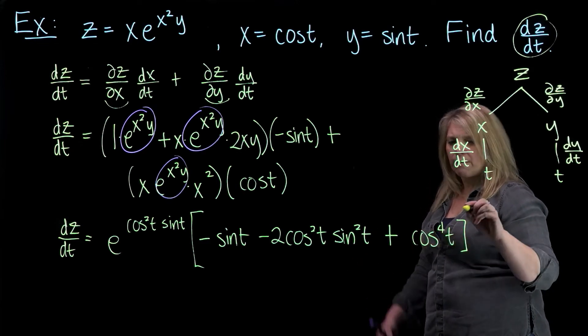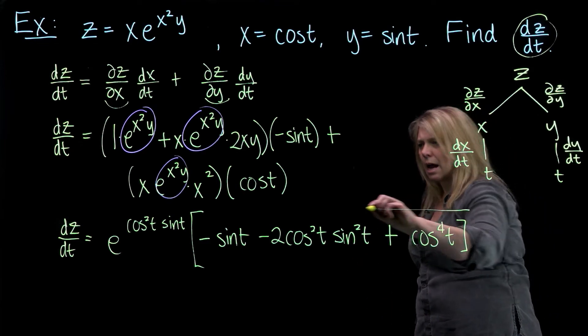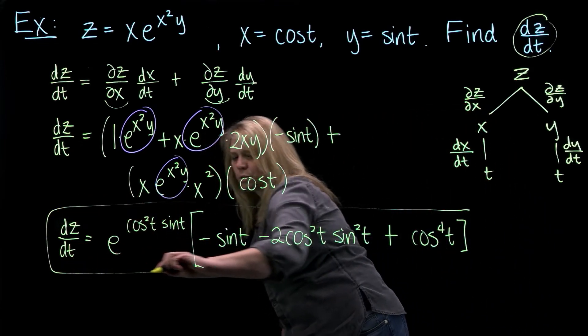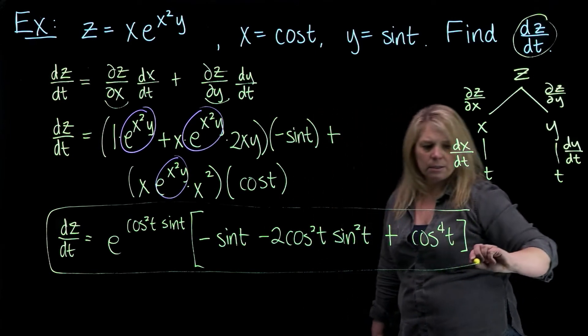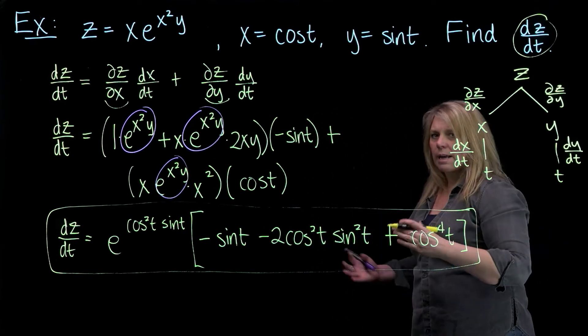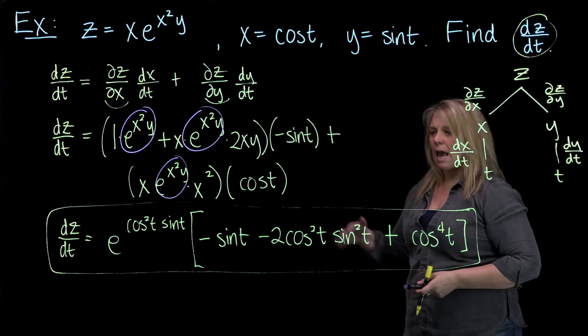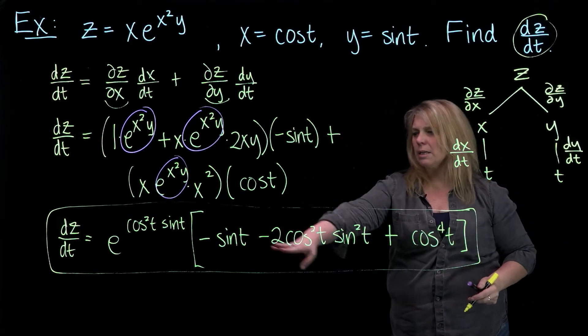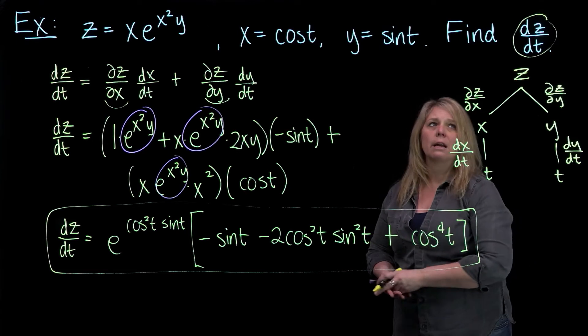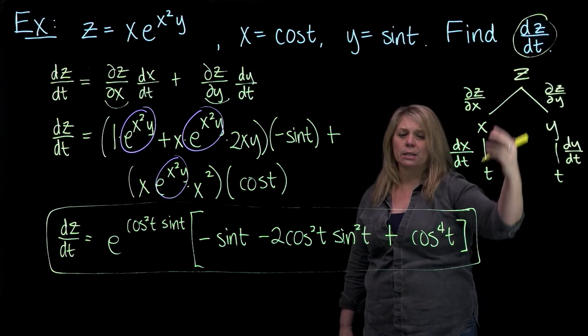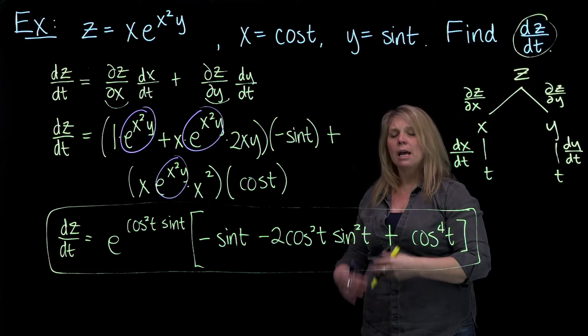So I simplified with some factoring and algebra — if you need to write that out in two separate steps, that's okay. But this expression is what was really asked for: dz/dt in terms of t.